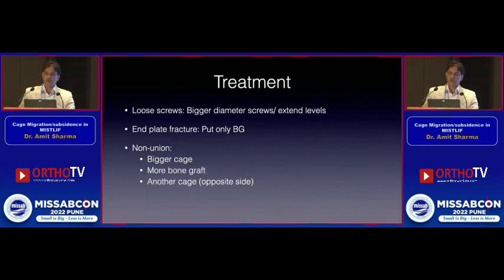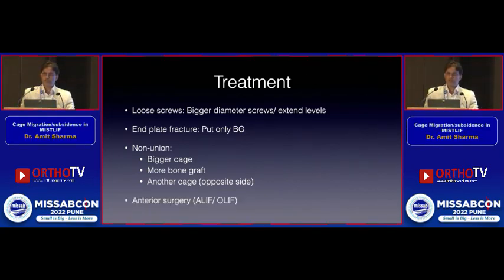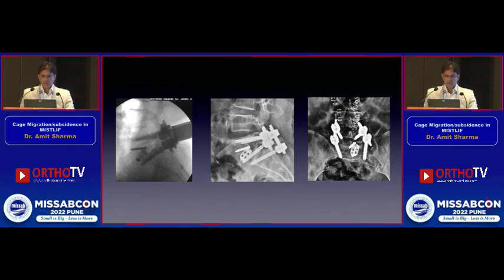In proven cases of non-union in the long term, you can put a bigger cage or more bone graft. If the cage can't be removed due to fibrosis or its position against the dura, consider going to the other side and placing a larger cage. In extreme situations, you can go anterior — perform an ACDF-like approach to remove the cage from the front and do an ALIF or OLIF procedure.